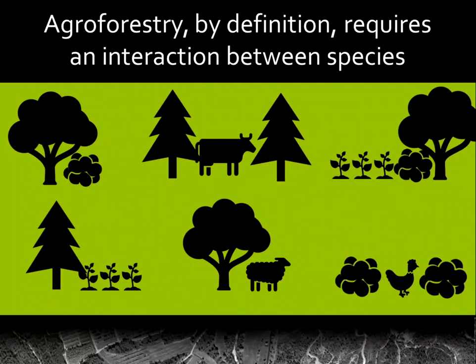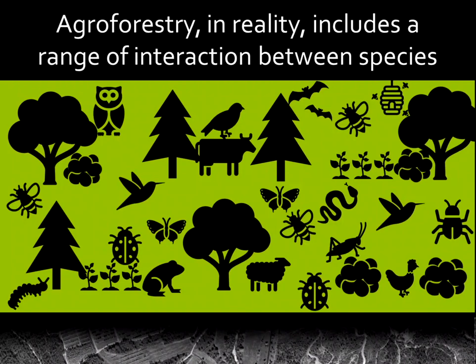As a reminder, agroforestry by definition requires an interaction between different species — it's going to have trees and shrubs interacting with crops or livestock. So we have many different combinations because we have different species of trees, different species of crops, and different species of livestock. In reality, when we have this very diverse system, we end up with a lot of different interactions between species because it draws in insects, reptiles, and a lot of beneficial wildlife that can benefit from this type of system.